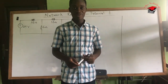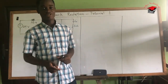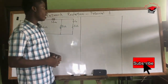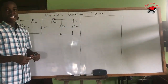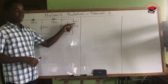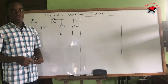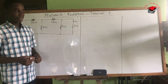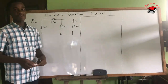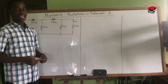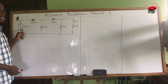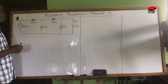Hello guys, welcome to our first tutorial on network reduction. In this tutorial we will be using the network reduction method to calculate the current flowing through resistor 5 ohms. For us to get the current in resistor 5 ohms, we first have to calculate the total current produced by the source.